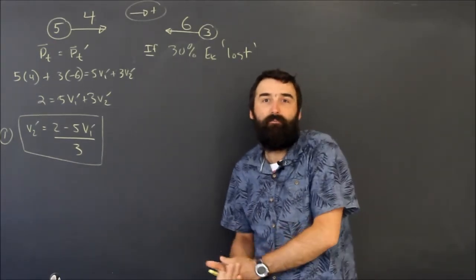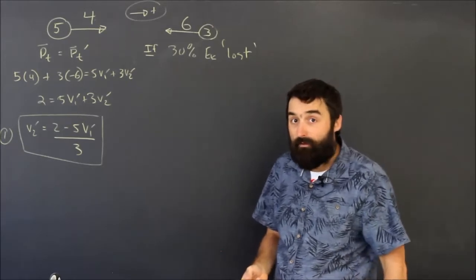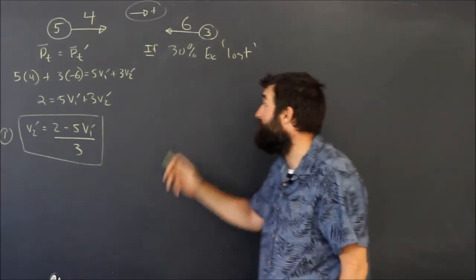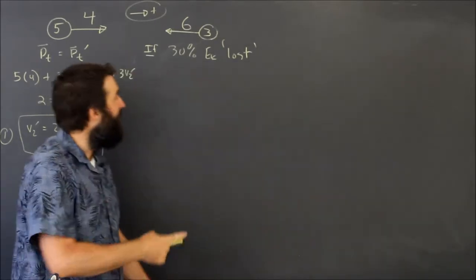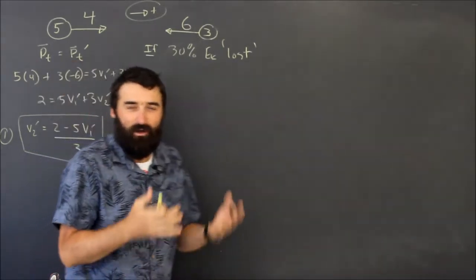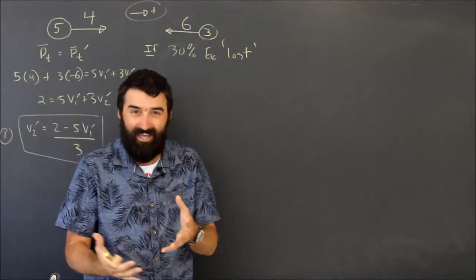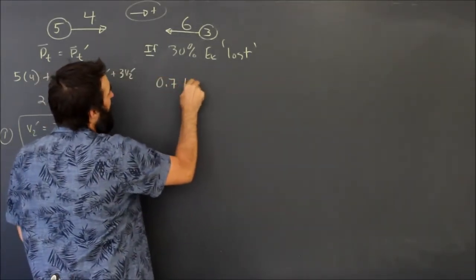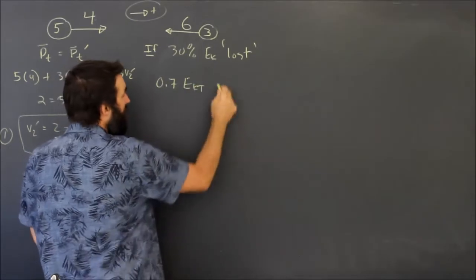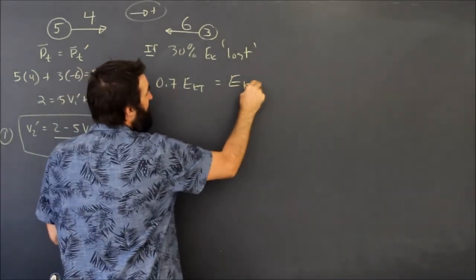If you get answers that are bigger than in part A, you know you've messed it up. It's a very common mistake because people screw up this next line all the time. How do you do the math on that? 30% is lost, well it means 70% of the kinetic energy is kept. It means 70% or 0.7 of the total kinetic energy before is equal to what's left over.